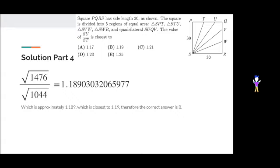Solution part four. Then what we do, we ask what the question wants us to do, and we divide SU by ST. So, SU is the square root of 1476, and ST is the square root of 1044. If you divide those, you get 1.18903032065977, which is approximately 1.189, which is closest to 1.19. Therefore, the correct answer is B, 1.19.